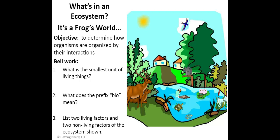What is the smallest unit of living things? We should remember that cells are the smallest unit of living things. You can have one little tiny cell or you can have many working together. What does the prefix 'bio' mean? Biology means living, so 'bio' means living.